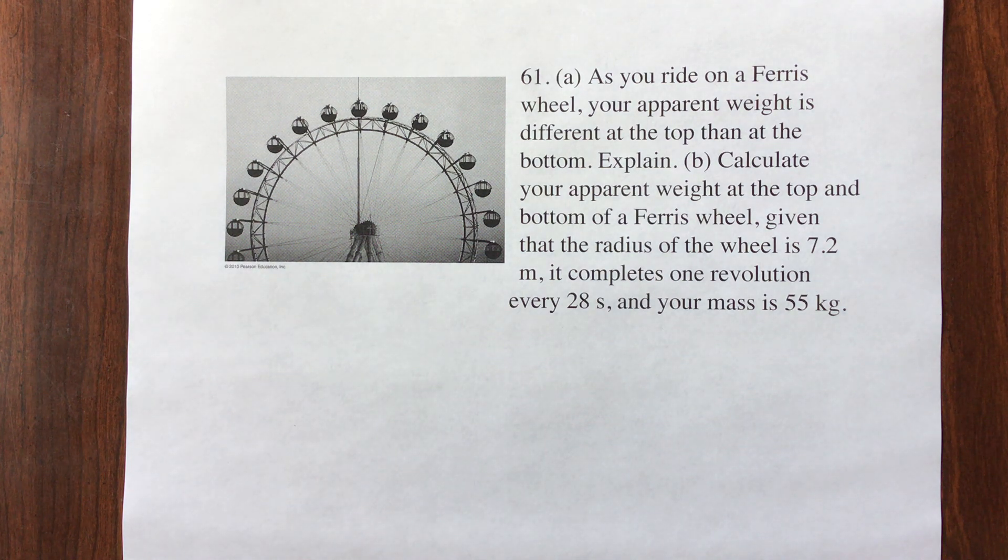As you ride on a Ferris wheel, your apparent weight is different at the top than at the bottom. Explain. The B part calculates your apparent weight at the top and bottom of the Ferris wheel given 7.2 meter radius and one revolution every 28 seconds, and your mass is 55.